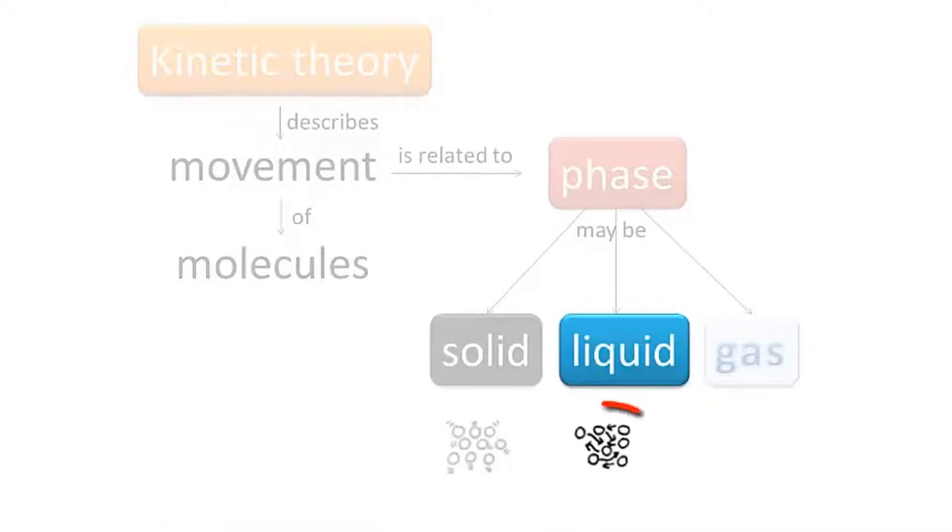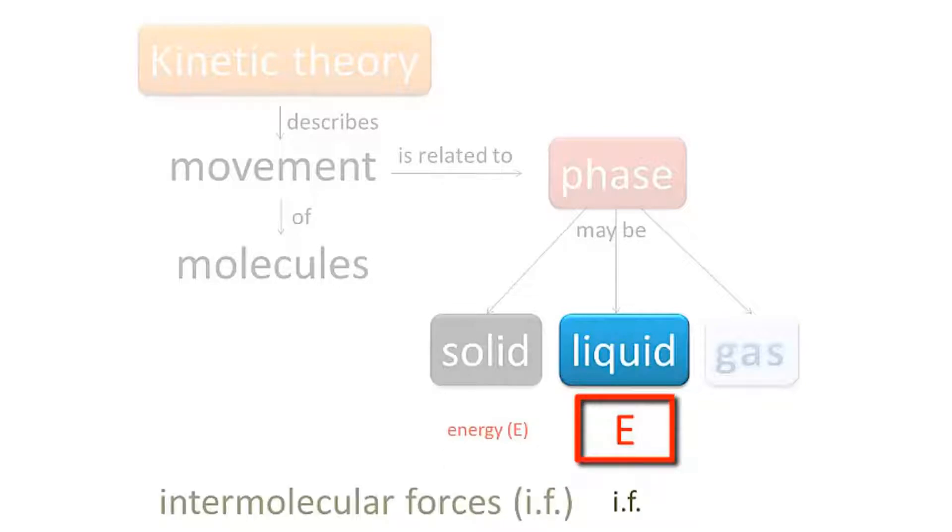In the liquid phase, according to this model, the molecules flow over one another. So they have more kinetic energy. They move a bit faster than just vibrating. They also have some more potential energy. They're a little bit further apart often. That's related to the intermolecular force strength.